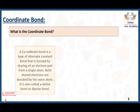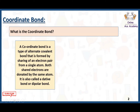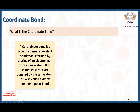A coordinate bond is a type of covalent bond that is formed by sharing of an electron pair from a single atom. Both shared electrons are donated by the same atom. It is also called an additive bond or a dipolar bond.